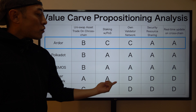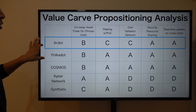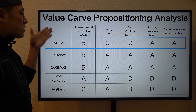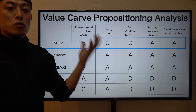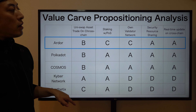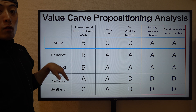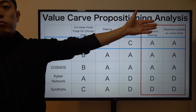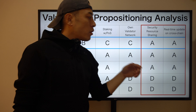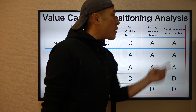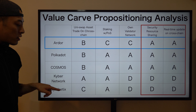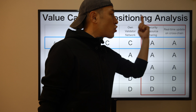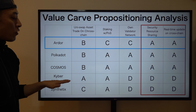Kyber Network and Synthetix still run their projects on the Ethereum platform, so they don't have their own validator. One competitive edge of blockchain interoperability software is having their own blockchain network — like a mining network. With this advantage, blockchain interoperability software can handle a variety of use cases that cannot be supported by those DEX players. The competitive features include security resource sharing and real-time updates on cross-chain for any type of data, not just asset transactions.